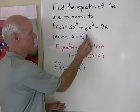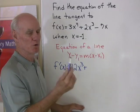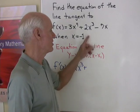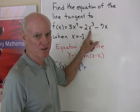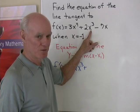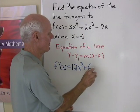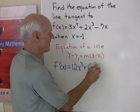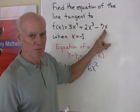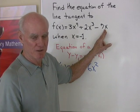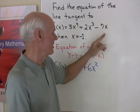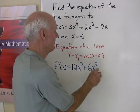Plus the derivative of 2x cubed will be 2 times the derivative of x cubed, and that will be 3x squared. So 2 times 3x squared will be 6x squared. And then the derivative of 7x will be 7 times the derivative of x. The derivative of x is 1, so 7 times 1 is 7.